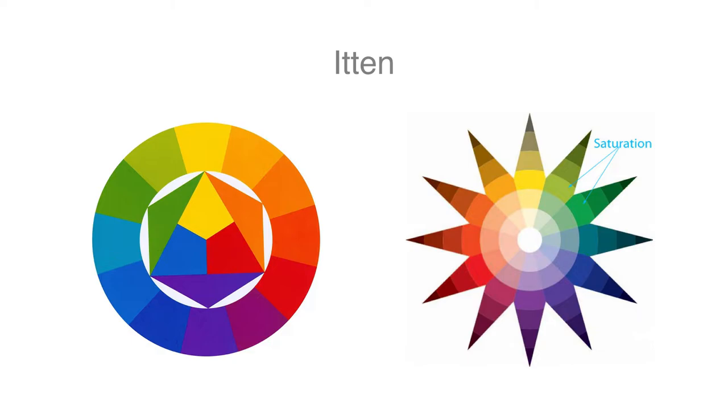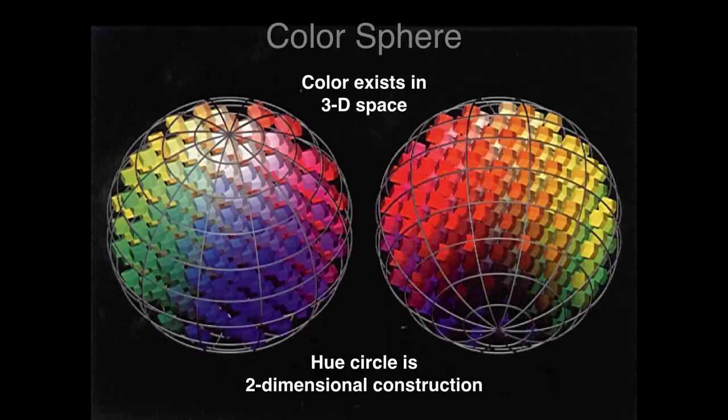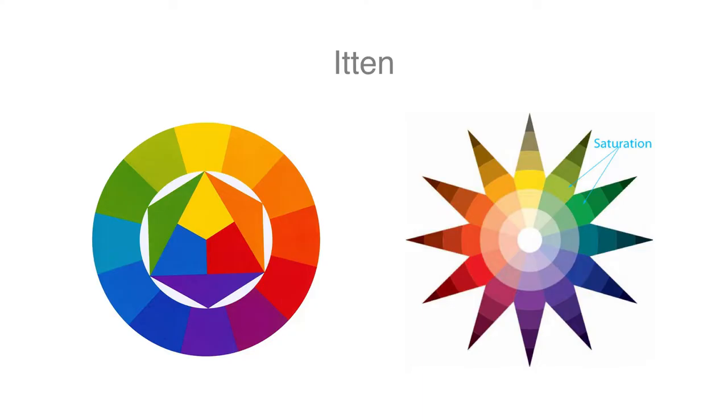So Itten propounded a color sphere out of which he derived a color star and the flat hue circle. So the color star is basically taking one of the poles of a sphere and extending out around to each of the 12 hues and their tints and shade possibilities.